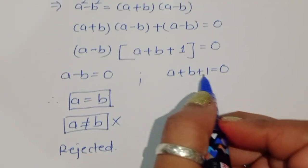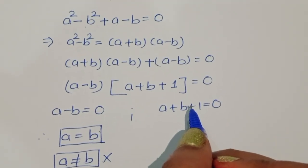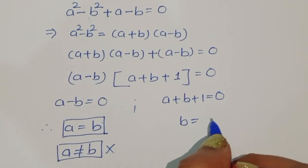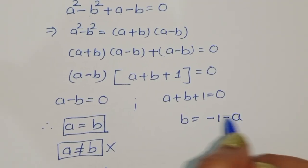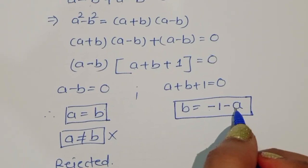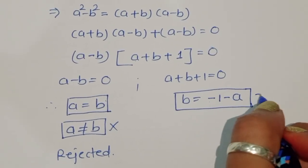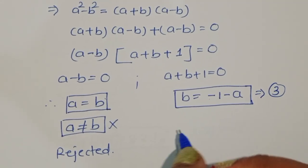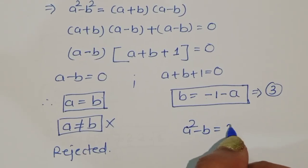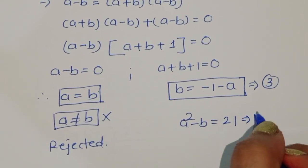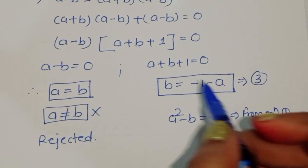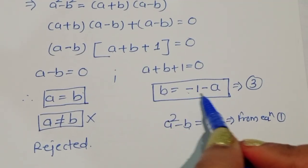So we use the second equation: a + b + 1 = 0. From this, we can write b = -1 - a. This is equation 3. Now, from equation 1, a² - b = 21, we substitute the value of b.